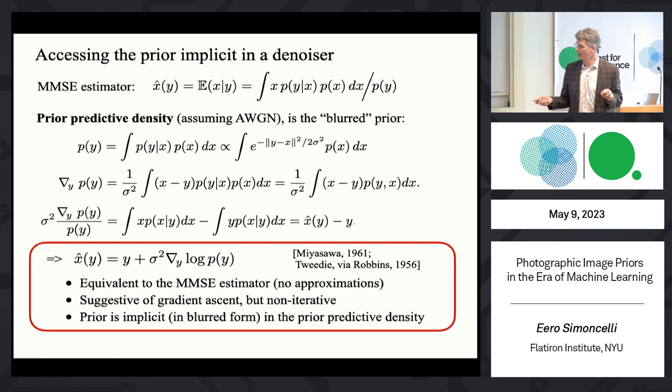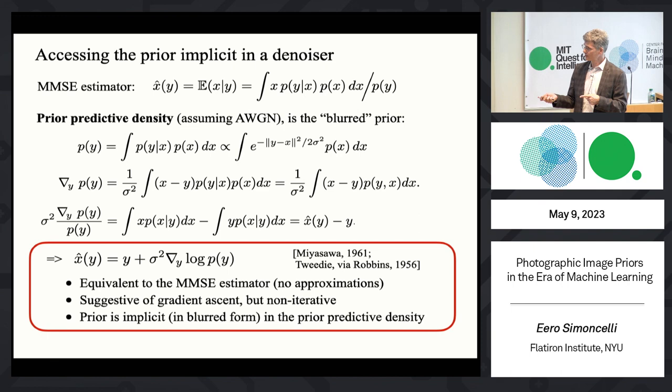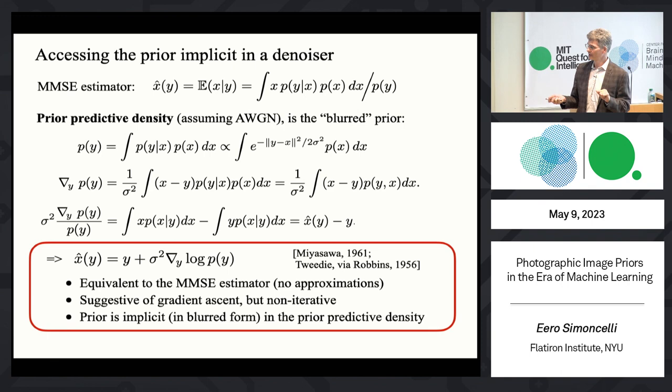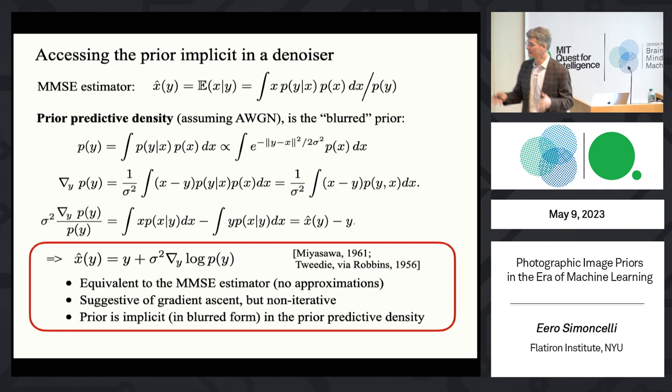The bottom line is this is a very strange rewriting in terms of a gradient. It is not an approximation — it's exactly equivalent. It looks like gradient descent, but it's not iterative — you take one step and you're there. And the answer to how I get the prior out of that network: the prior is in there. Instead of being embedded in a giant integral, it's in there in the network, which knows how to compute this blurred version of the prior.